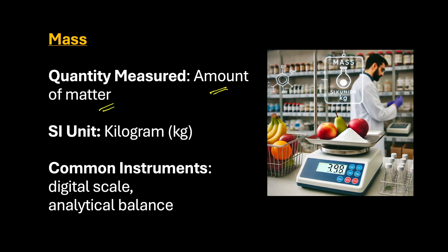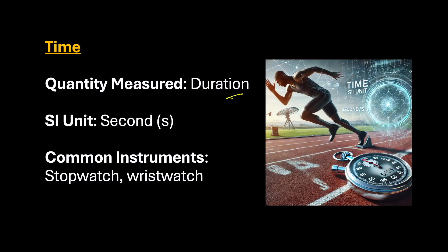Next is mass. Mass measures the amount of matter and the SI unit of mass is kilogram, which we write as small k, small g. We have different instruments to measure mass like digital scale, analytical balance, etc. Now it is time to talk about time. Time is a quantity which helps us in measuring duration. The SI unit of time is second, which we write as small s. Different instruments that can be used are stopwatch, wrist watch, etc.